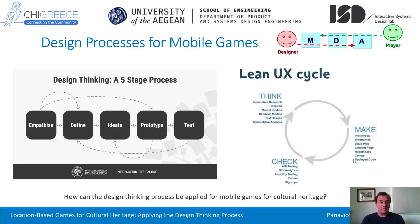When we started this project on Mobile Games for Cultural Heritage, we considered several design processes. We chose to follow the design thinking process, which is a five-stage process including: empathizing with the problem and the people in context, defining the problem, ideating about ideas and solutions, prototyping with several means and materials, and testing the outcomes from the user perspective.